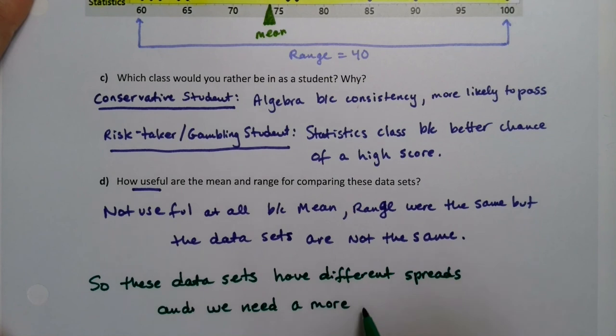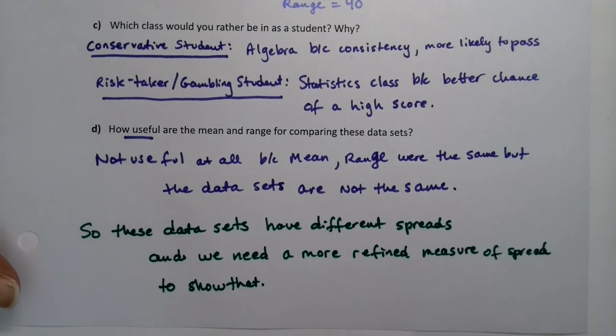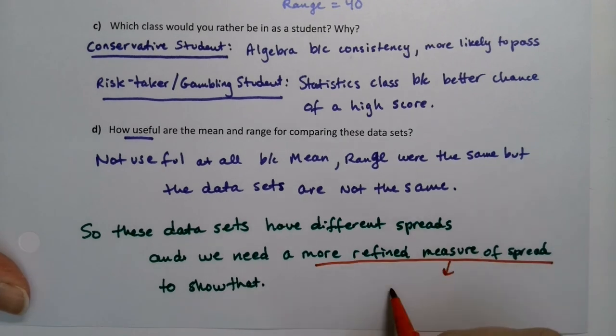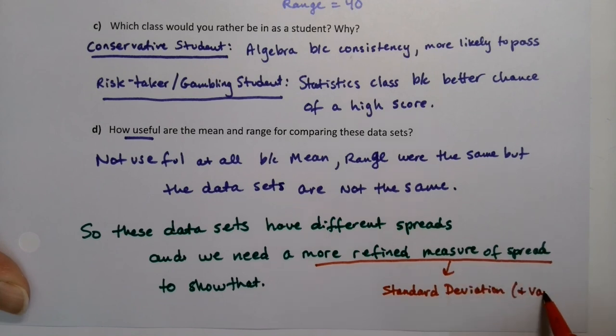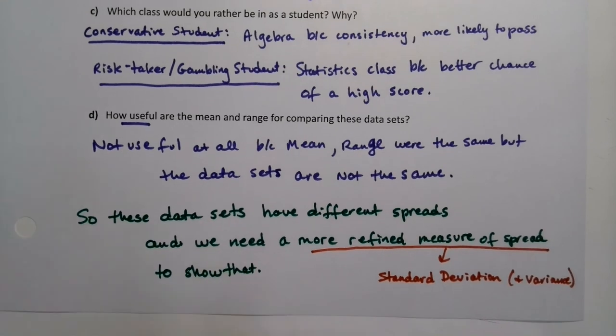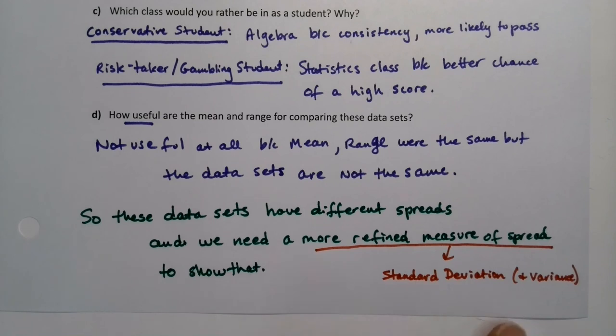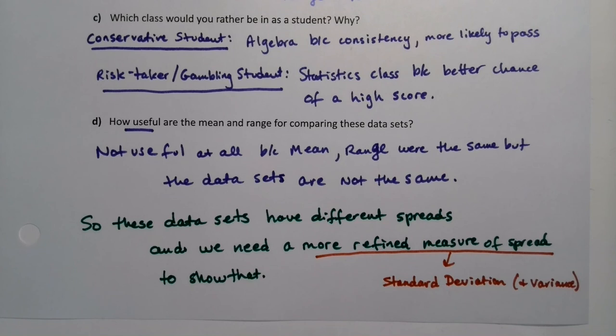Enter, that more refined measure of spread will be, well, it'll be standard deviation. But variance is on the way to that. They go hand in hand. So I'll just say variance and standard deviation. Both of those are more refined measures of spread. There are different times when we want to use each of them, but they are very closely related to each other. So variance and the standard deviation will be able to show us a spread for that data set that we're not able to get with just range.